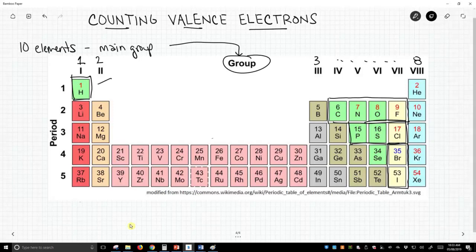So hydrogen is in group 1, therefore hydrogen has 1 valence electron. Carbon is in group 4, therefore it has 4 valence electrons.